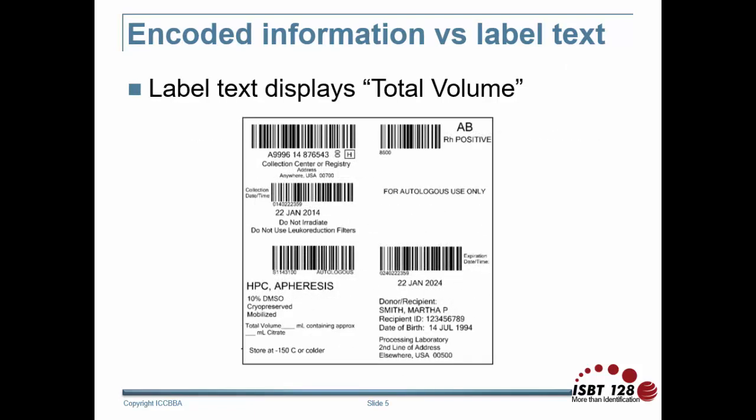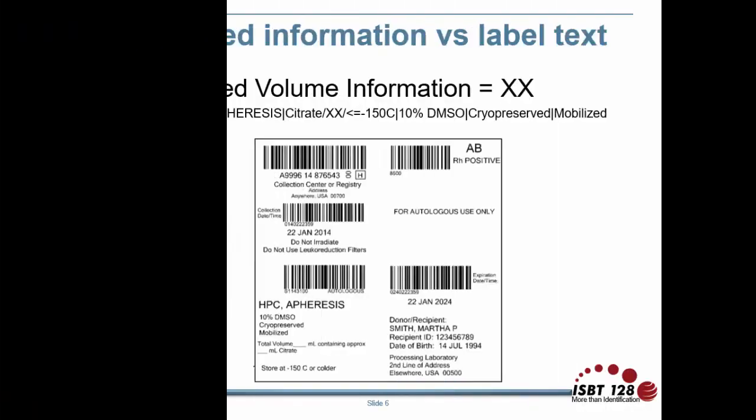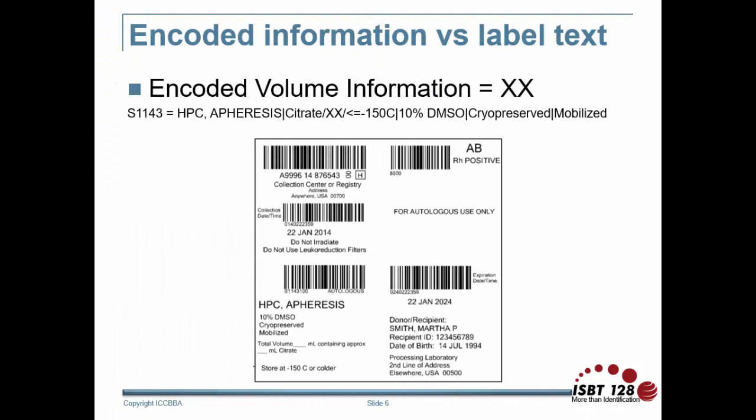Another example commonly occurs with cell therapy labels. The volume for cell therapy products may vary. The actual volume is not encoded, and actual volume information can be printed or handwritten on the label as text. The product volume encoded in the barcode is the value XX, which specifies that the volume is variable and not provided as part of the core conditions of the product description.